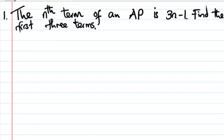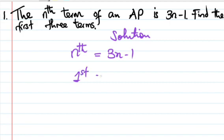So the nth term equals 3n minus 1. To find the terms, we use this formula. For the first term, we put n equals 1, so it's 3 times 1 minus 1. Three times one is three, minus one, so the first term is 2.